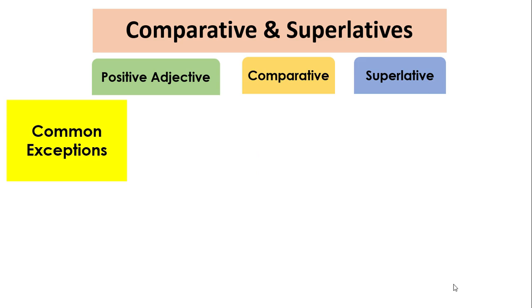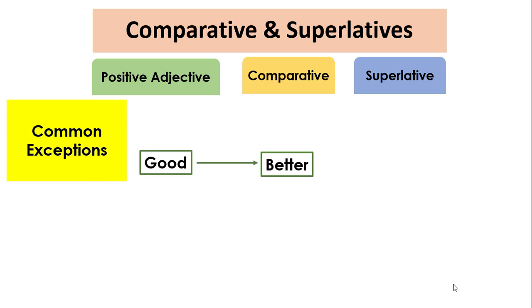Let's take another example: 'good'. The comparative degree of 'good' is 'better' and the superlative degree of 'good' is 'best'. There are more exceptions such as 'far' and 'little', but we will see these in another video.